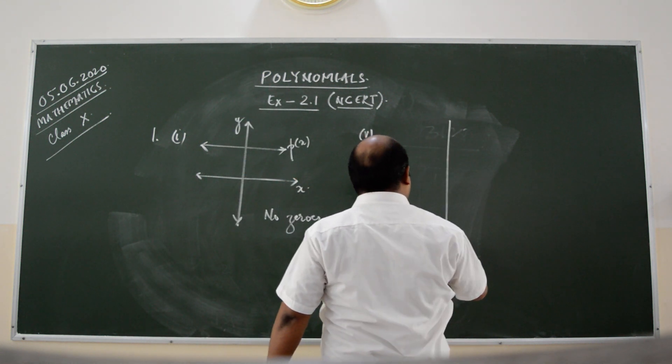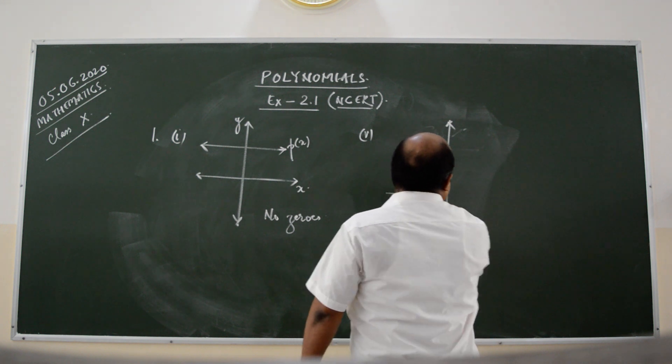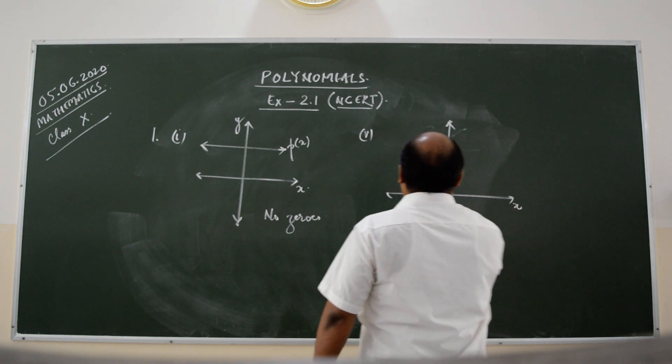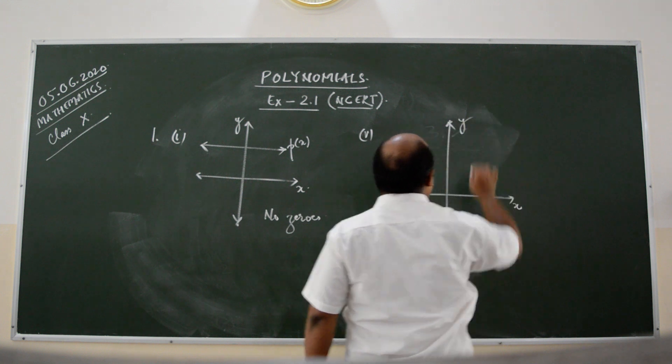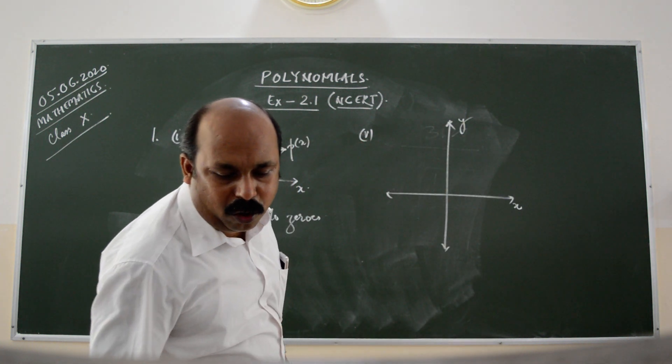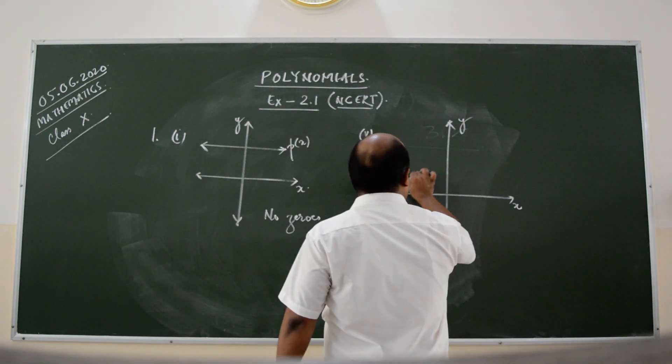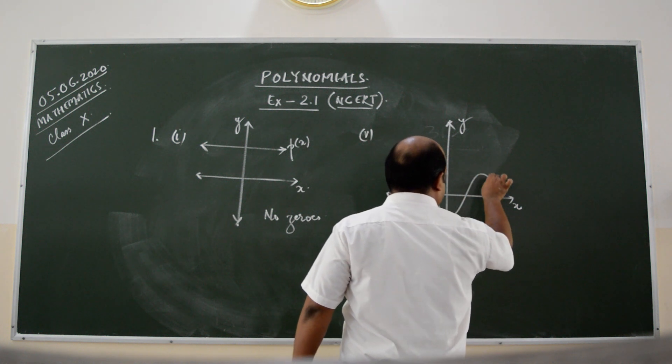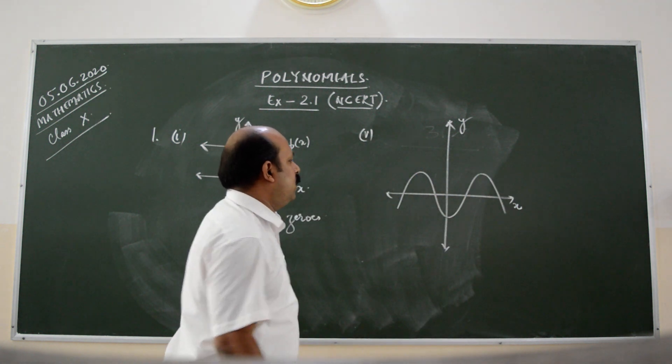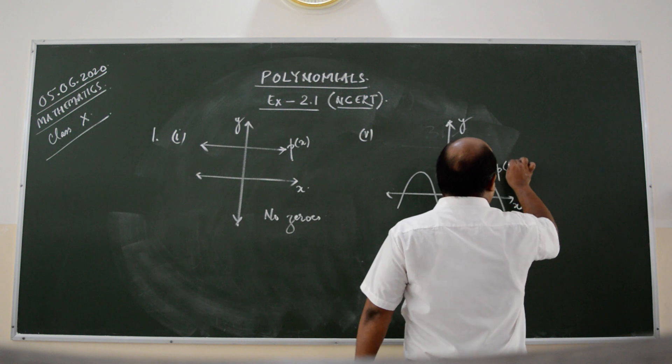For the fifth question, what do we have? This is the x axis and this is the y axis and the graph of the polynomial is given in this way. This is the graph of y is equal to p of x.